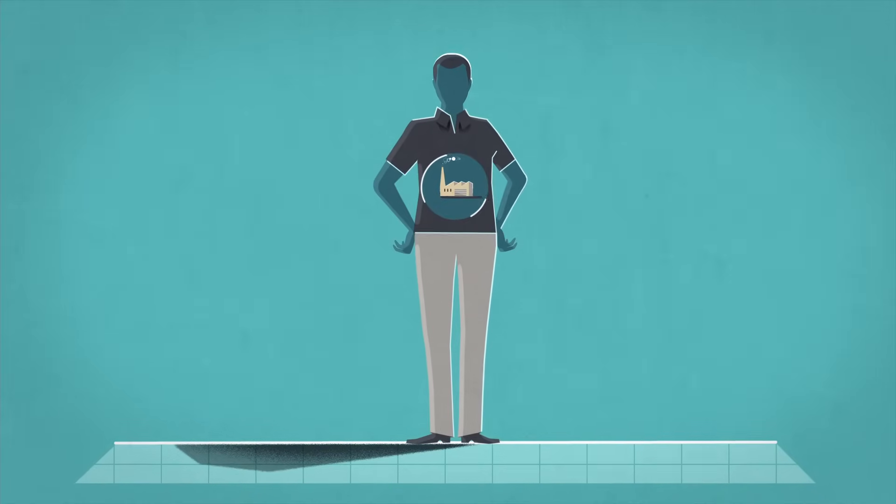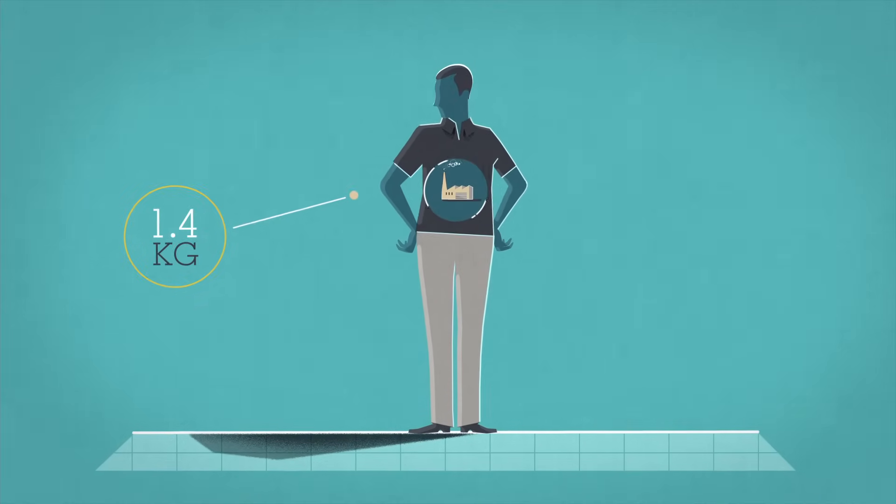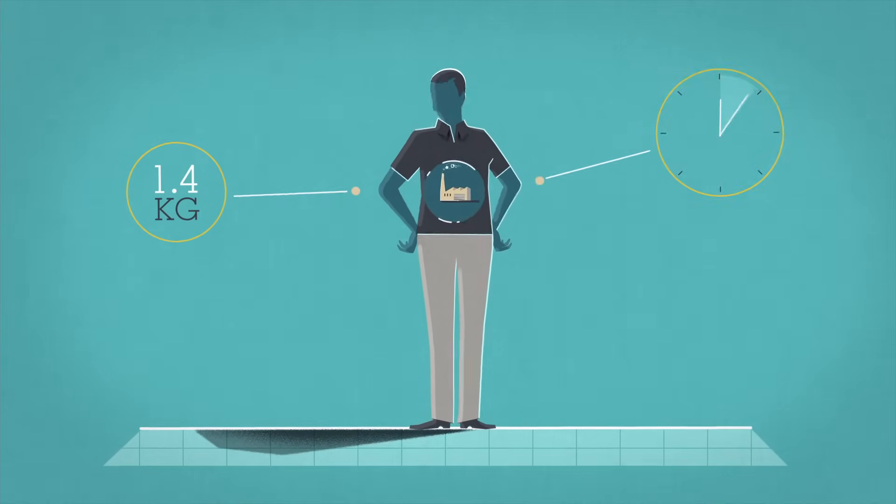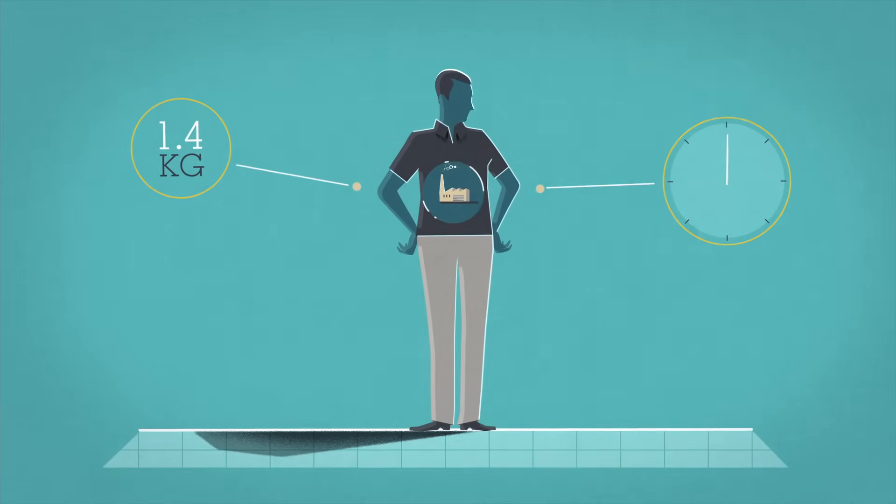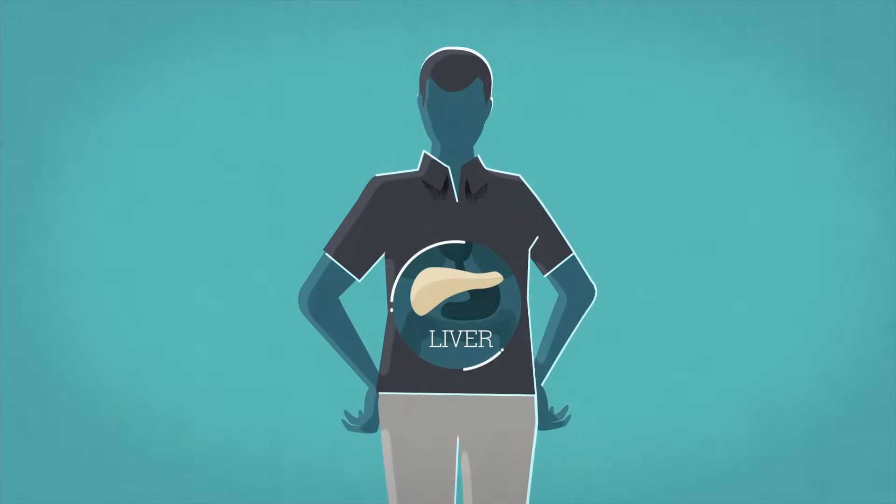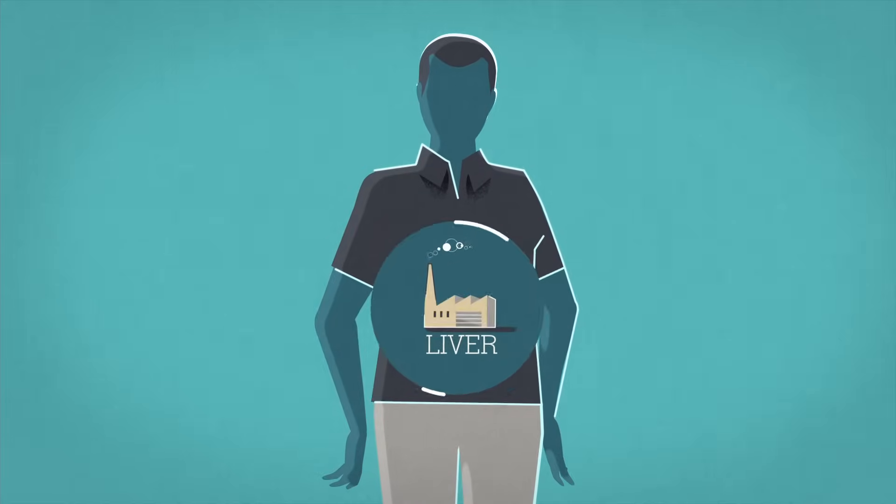There's a factory inside you that weighs about 1.4 kilograms and runs for 24 hours a day. This is your liver, the heaviest organ in your body, and one of the most crucial.